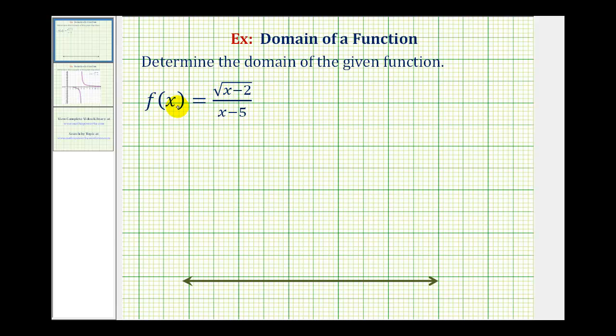We're going to determine the domain of the function f of x equals the square root of the quantity x minus two divided by the quantity x minus five. For this function, both the numerator and denominator will give us restrictions on the domain.